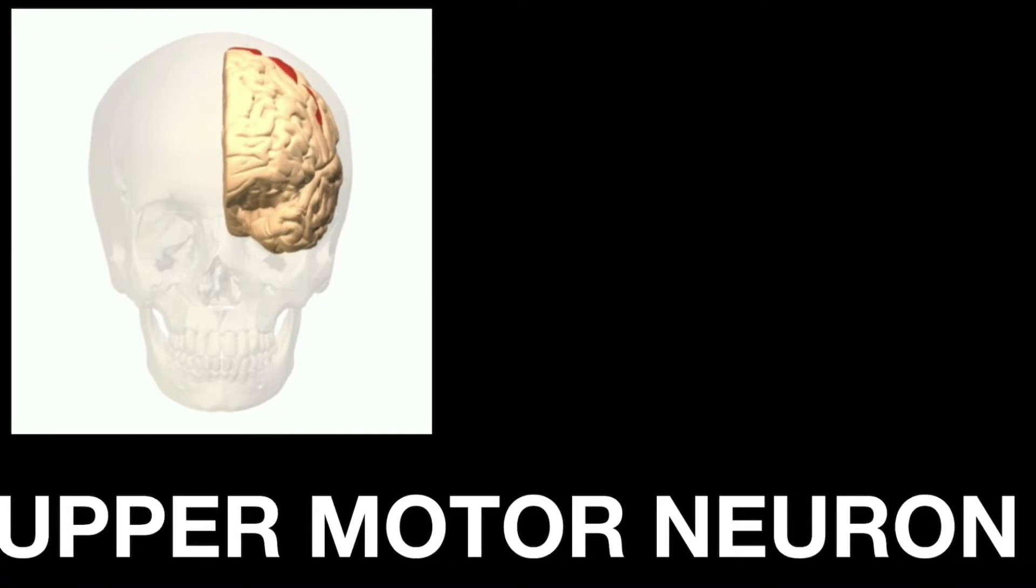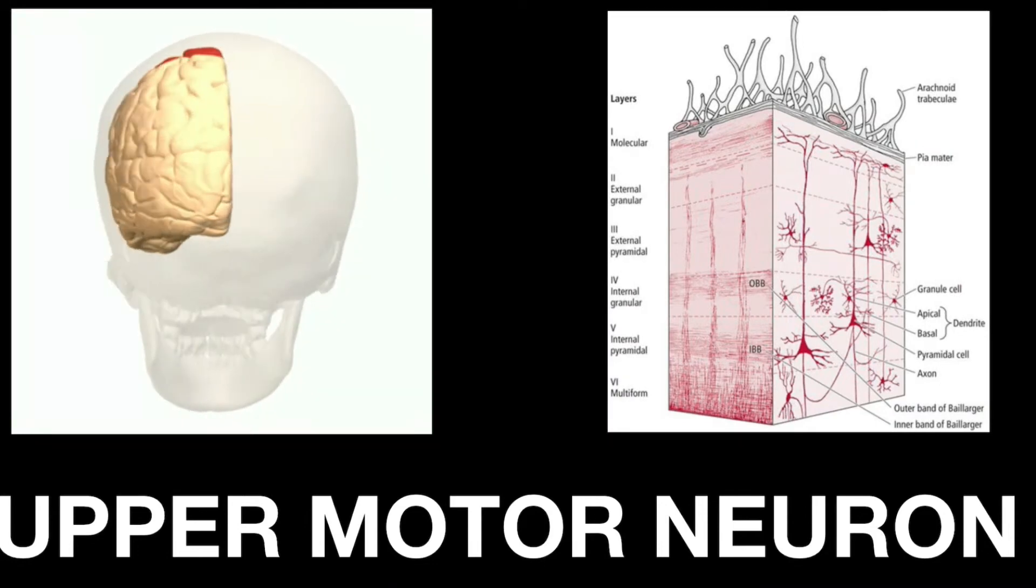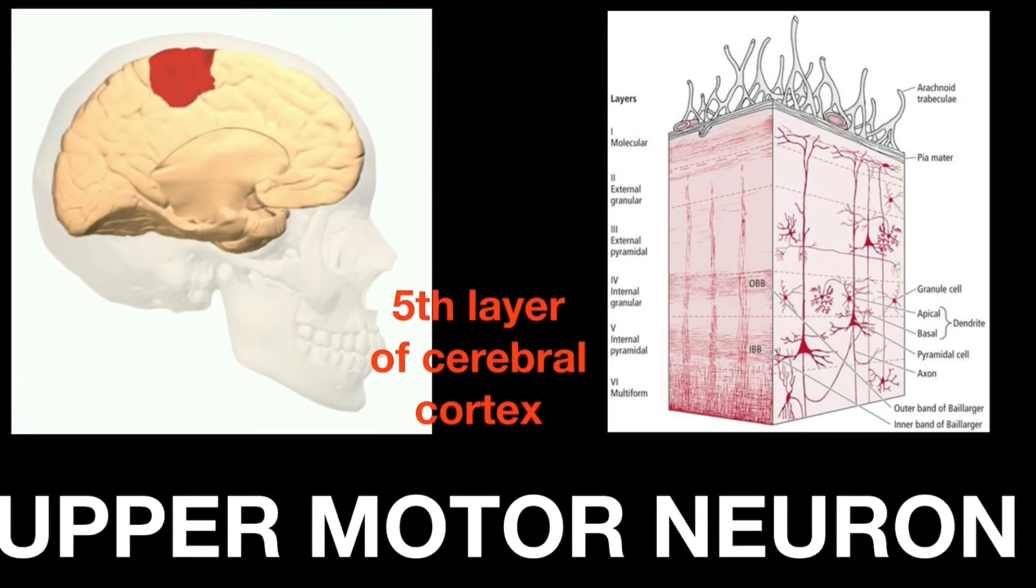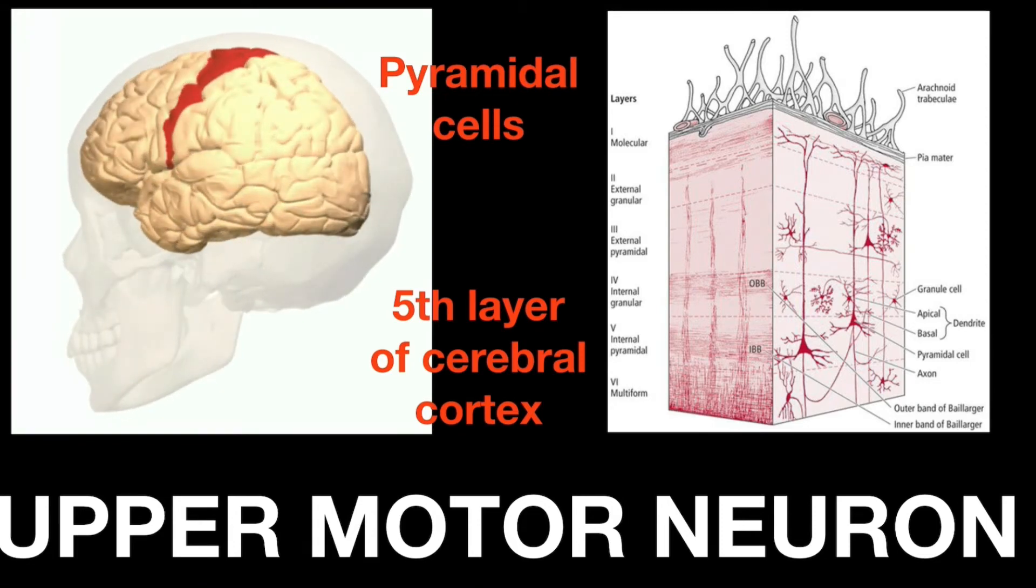While an upper motor neuron originates in the motor cortex which is located in the precentral gyrus. The cerebral cortex is divided into six layers and its fifth layer contains pyramidal cells whose axons form the descending tracts and together these supraspinal neurons and their tracts are called as upper motor neurons.